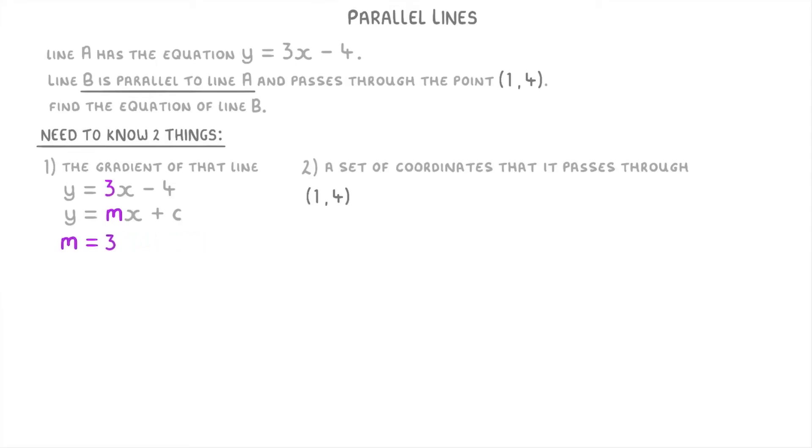This means that line B, which remember is parallel to it, must also have a gradient of 3.